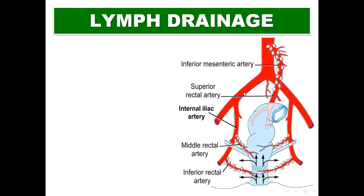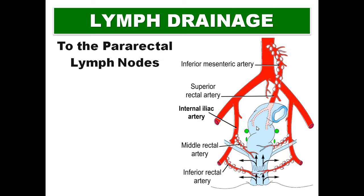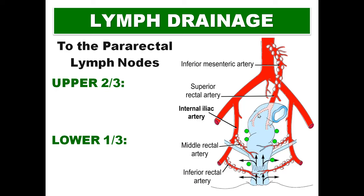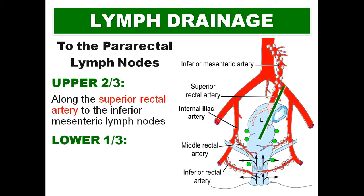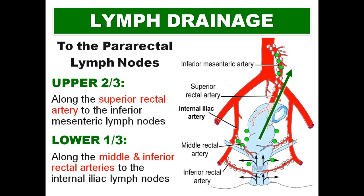Regarding the lymph drainage of the rectum: the rectum drains first to the pararectal lymph nodes. From the pararectal lymph nodes, lymphatics follow two routes based on upper two-thirds and lower one-third. The upper two-thirds drain along the superior rectal artery to the inferior mesenteric lymph nodes. The lower third drains along the middle rectal artery and inferior rectal artery to the internal iliac lymph nodes. So the ultimate drainage is to the inferior mesenteric lymph nodes and the internal iliac lymph nodes.